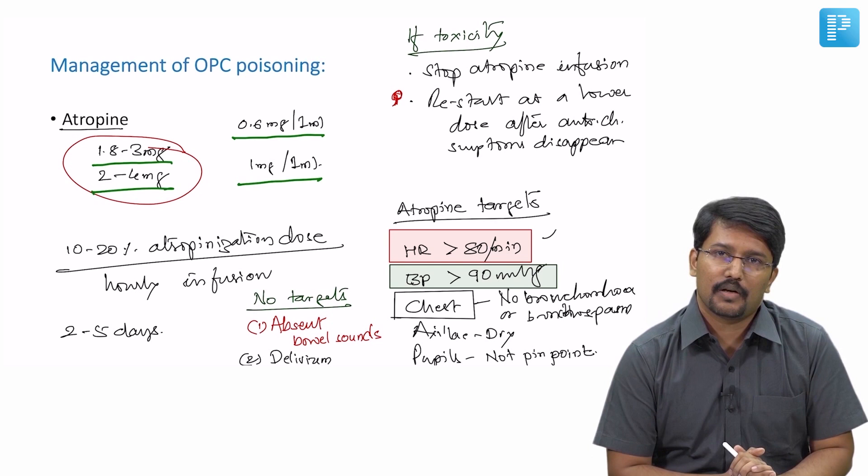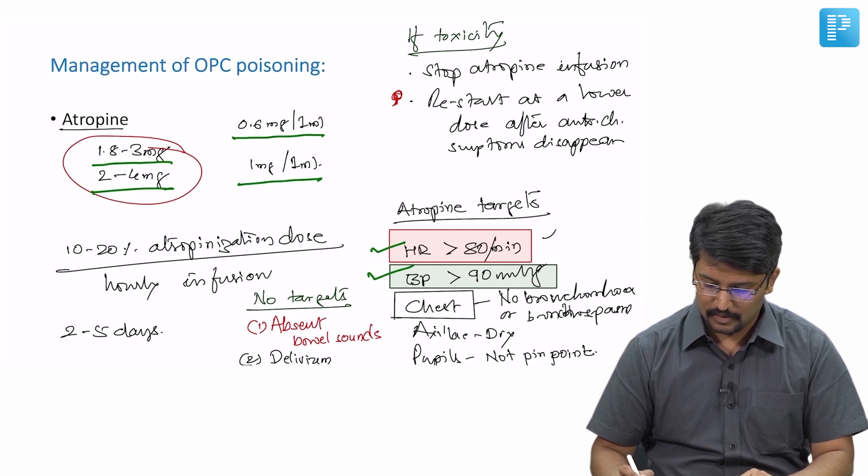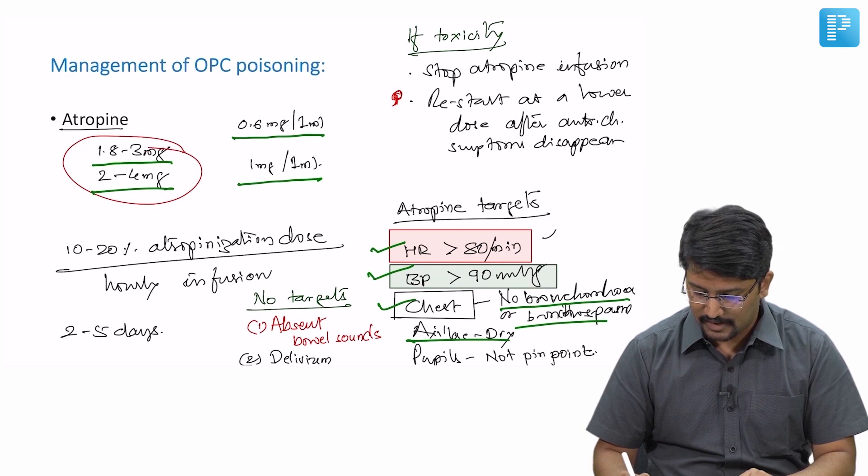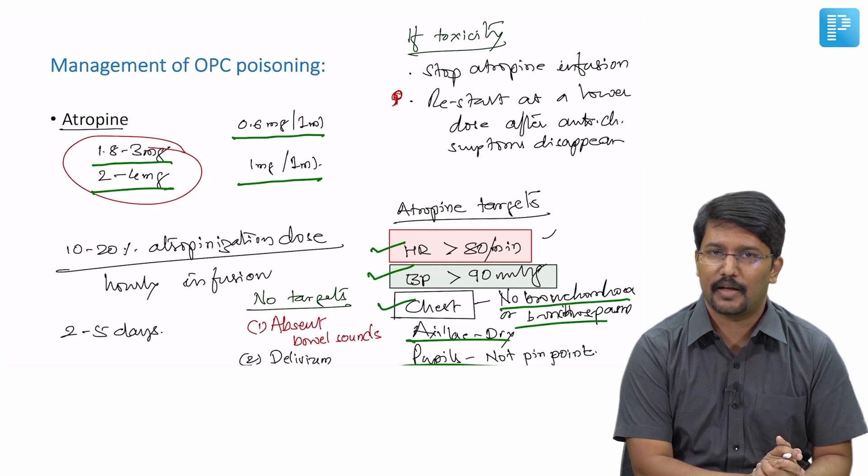So what are the atropine targets? The atropine targets are heart rate more than 80, blood pressure more than 90, and no bronchospasm or bronchorea on chest auscultation, dry axilla, and pupils which are no longer pinpoint. It can be mid-dilated or fully dilated but no longer pinpoint. These five are the atropine targets.